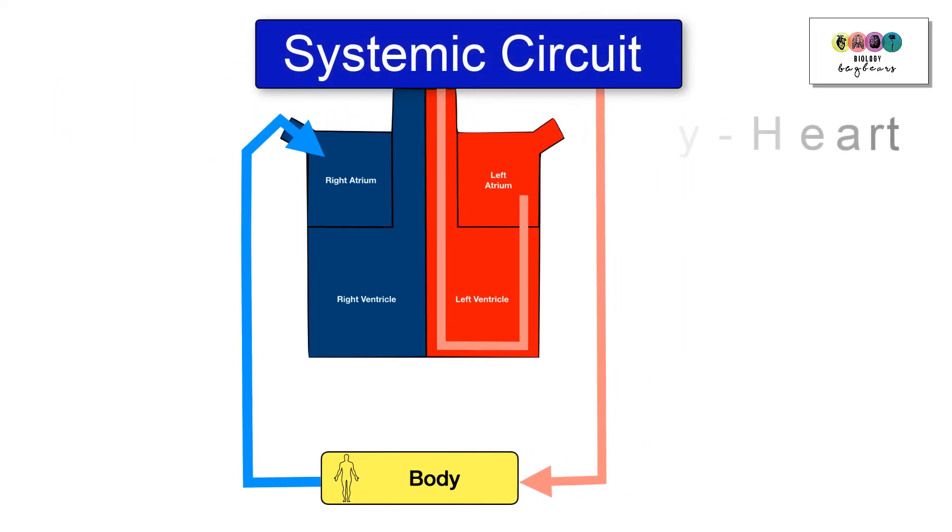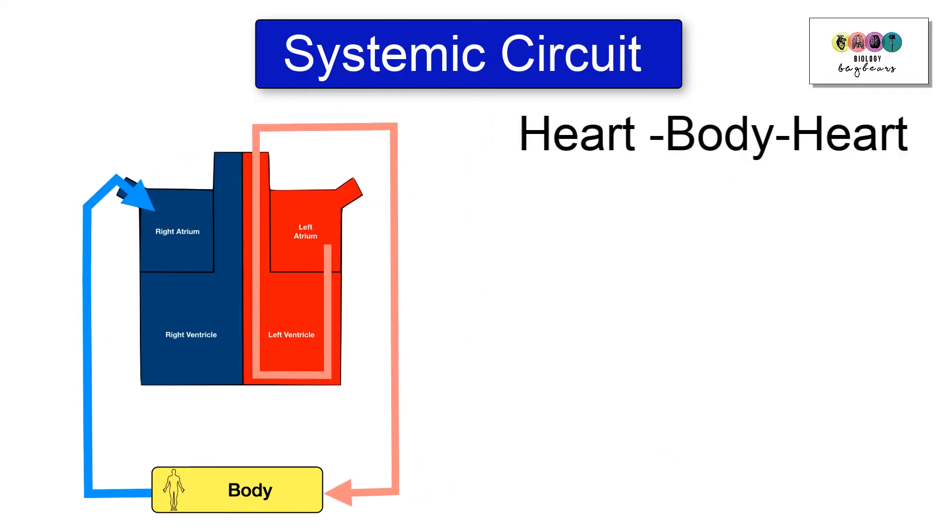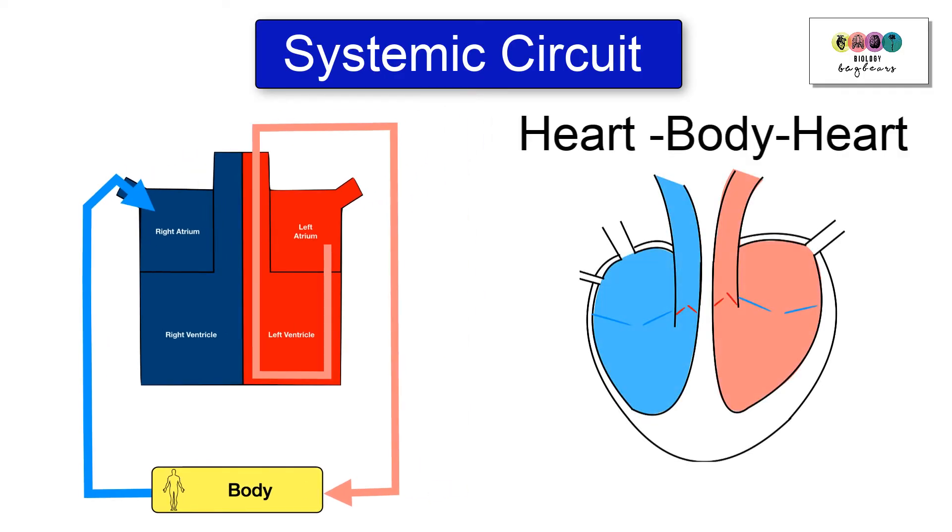The systemic circuit involves pumping the blood quite a long distance from the heart to all areas of the body and back to the heart again and that's why the wall of the left ventricle is that much thicker than the right.